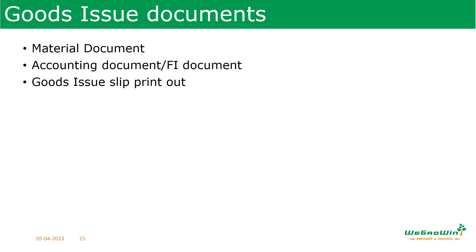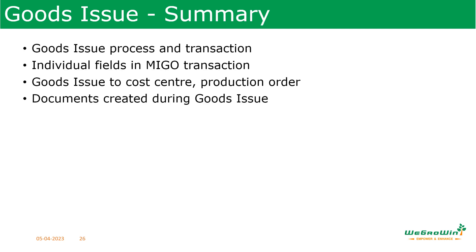A goods issue slip is a printed document that can be issued by the warehouse to find the material and provide a physical record that material has been picked for the goods issue. It can be considered the inventory management version of the warehouse management picking ticket. As with goods receipt, there are three options: individual slip (printed for each item), individual slip with inspection text, or collective slip where one goods issue contains all items.